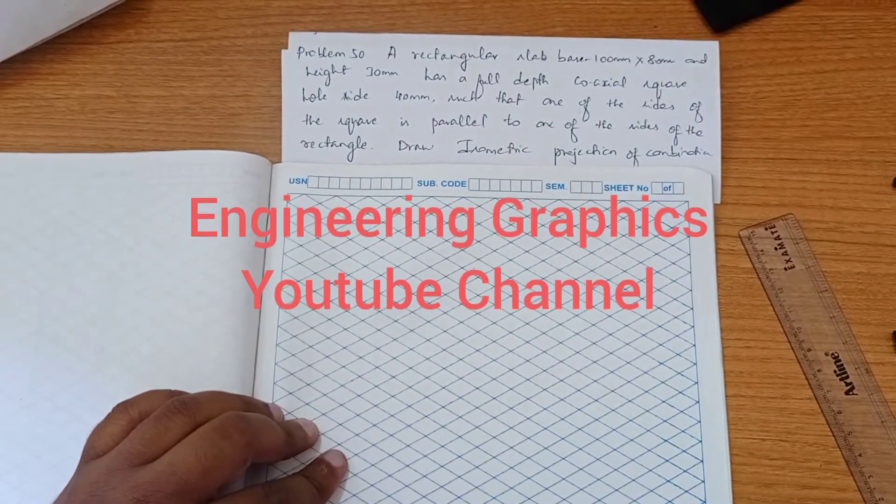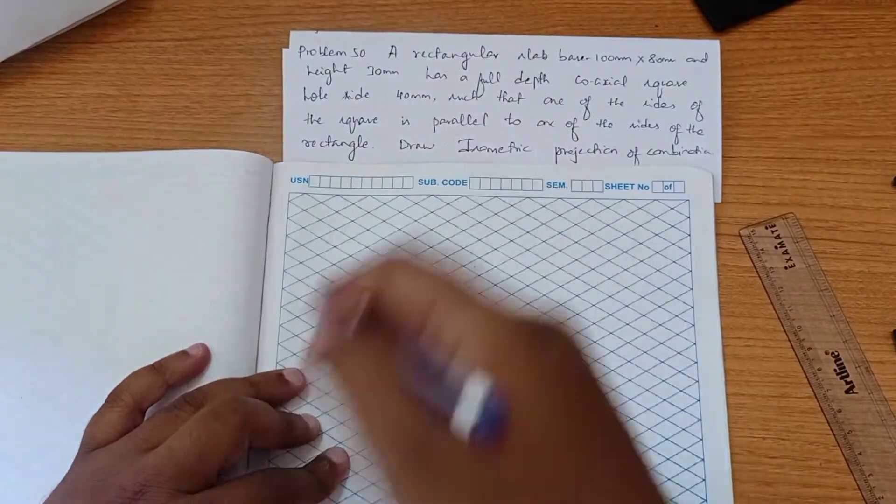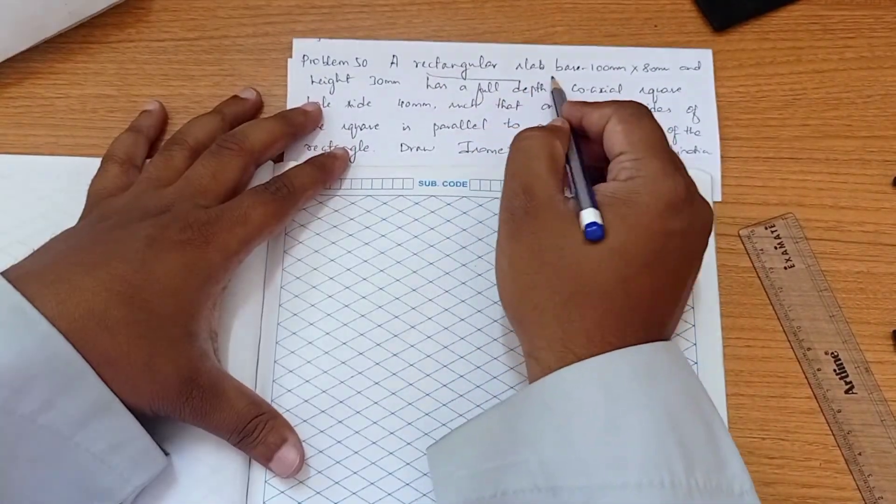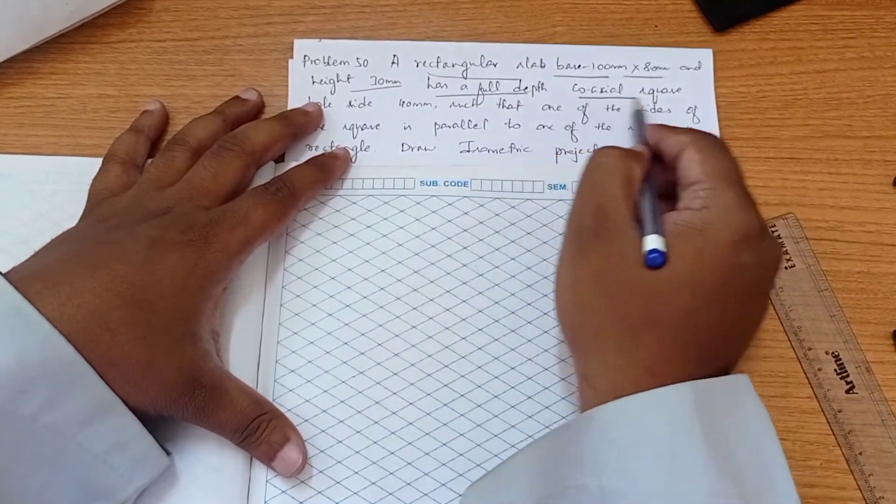Problem number 50 from CAT solution book in isometric. In this problem they have given a rectangular slab of side 100 by 80 and height 30 with a full depth coaxial square hole.